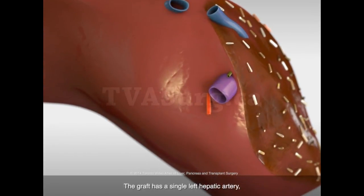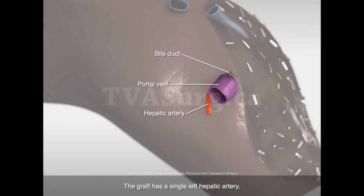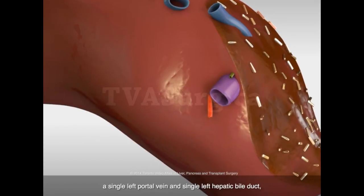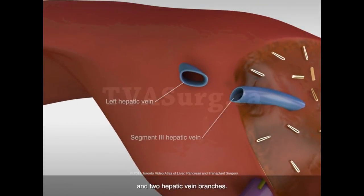The graft has a single left hepatic artery, a single left portal vein, a single left hepatic bile duct, and two hepatic vein branches.